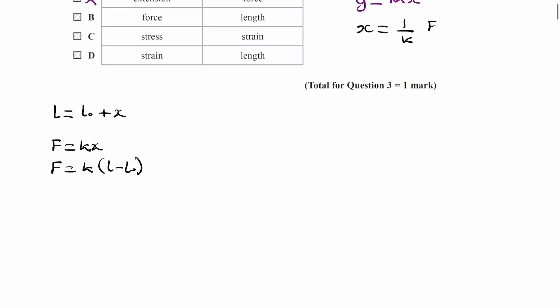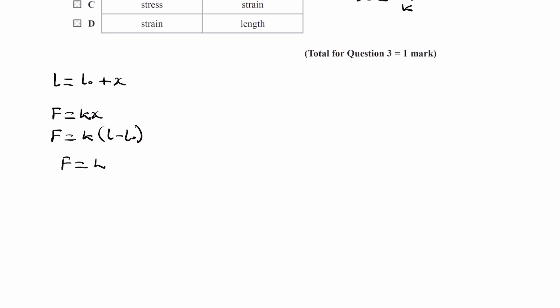If we multiply that out, we end up with F = kL - kL₀. So if we were to plot force on the y-axis, length on the x-axis, this equation is of the form y = mx + c, where our gradient is k and our y-intercept is some non-zero value.